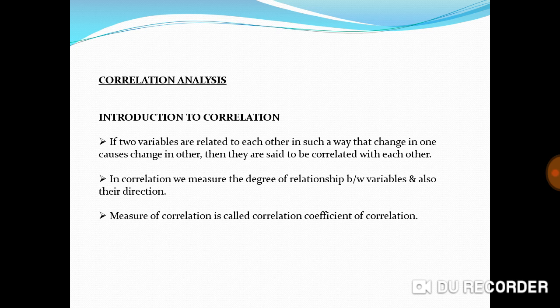In correlation, we measure the degree of relationship between variables and also their direction. Measure of correlation is called correlation coefficient of correlation.